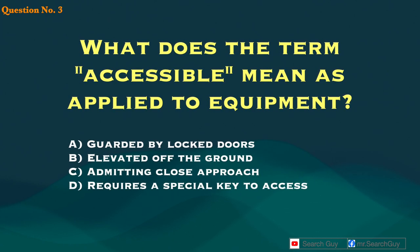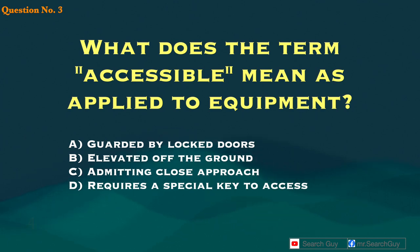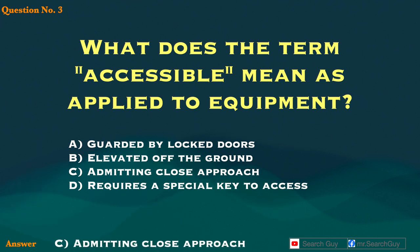Question 3. What does the term 'accessible' mean as applied to equipment? A. Guarded by locked doors. B. Elevated off the ground. C. Admitting close approach. D. Requires a special key to access. Answer: C. Admitting close approach.